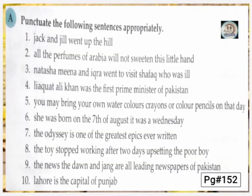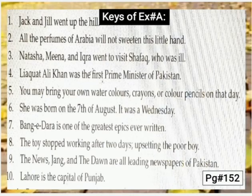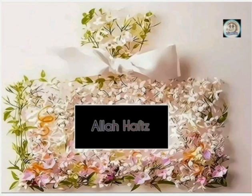Page number 152 پر exercise A دیکھیں۔ پہلے سے sentence دیا گیا ہے، ہم نے punctuation correct کرنا ہے۔ First sentence: 'Jack and Jill went up the hill' — Jack اور Jill دونوں person ہیں، اس لئے Jack کا J اور Jill کا J capital letter میں آئے گا، اور آخر پر hill کے بعد full stop لگائیں۔ اسی method کو مدنظر رکھتے ہوئے exercise A بک پر fill کریں، date لکھنا نہ بھولیں۔ Keys of exercise A — best of luck, take care, Allah Hafiz۔